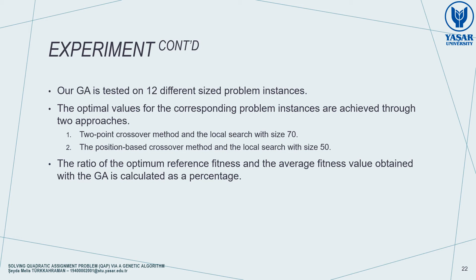We tried to achieve optimal values for the problem instances through two approaches. The first is to use the two-point crossover method and local search with size 70. In the second approach, the crossover method is changed to position-based crossover and the local search size is decreased to 50. We calculated the ratio of the optimum reference fitness and the average fitness value obtained with RGA.